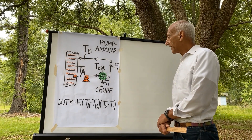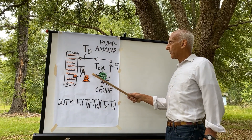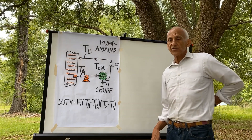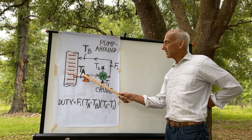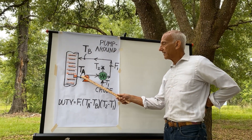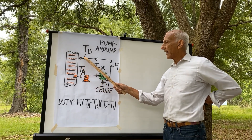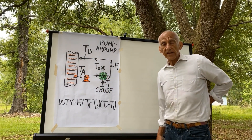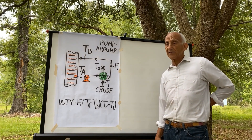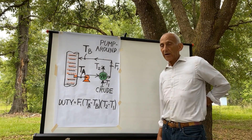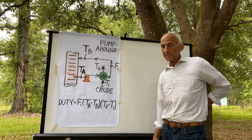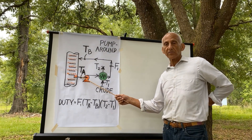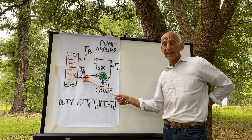I have here a crude tower pump around. I draw your attention to two temperature points: temperature at point A and temperature at point B. As the operator increases the pump around circulation rate, I will absolutely guarantee you that the draw temperature at point A will go down.